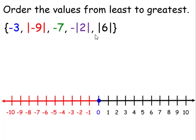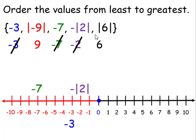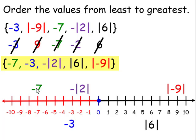Let's order the values from least to greatest. First, let's simplify each expression when needed. Negative 3 is just negative 3. The absolute value of negative 9 is 9. Negative 7 is just negative 7. The opposite of the absolute value of 2 is negative 2. The absolute value of 6 is 6. The least number is negative 7, followed by negative 3, then negative 2, then 6, then 9. Notice I used their original values when placing them — this makes it easier when writing from least to greatest: negative 7, negative 3, the opposite of the absolute value of 2, the absolute value of 6, and the absolute value of negative 9.